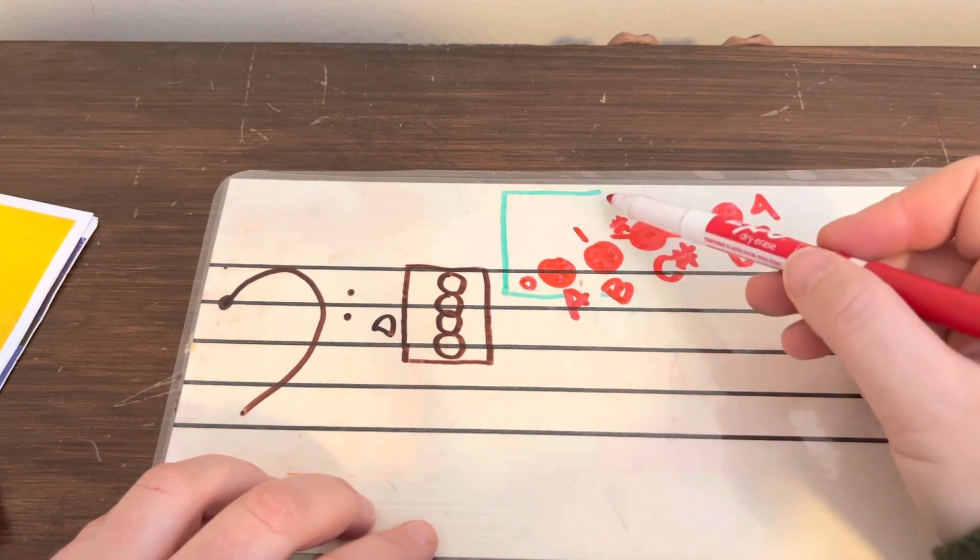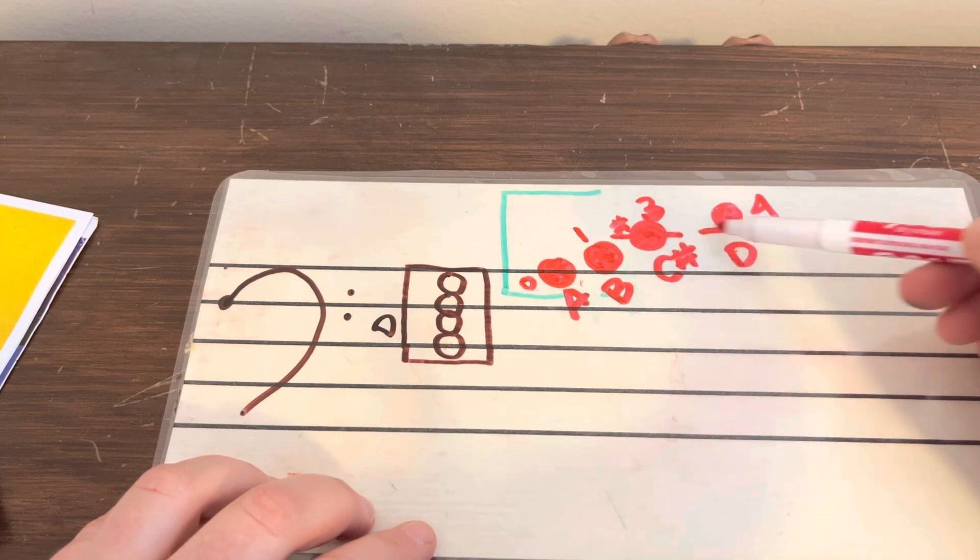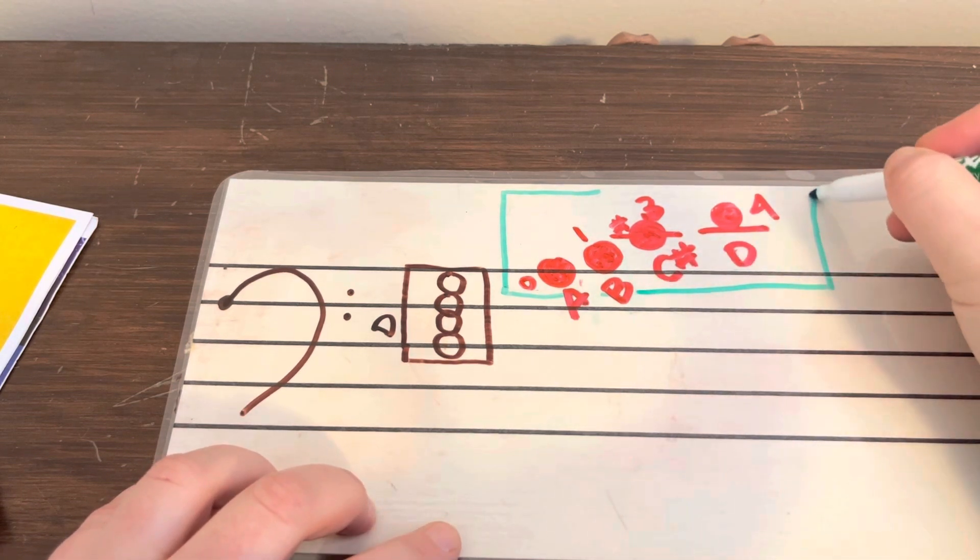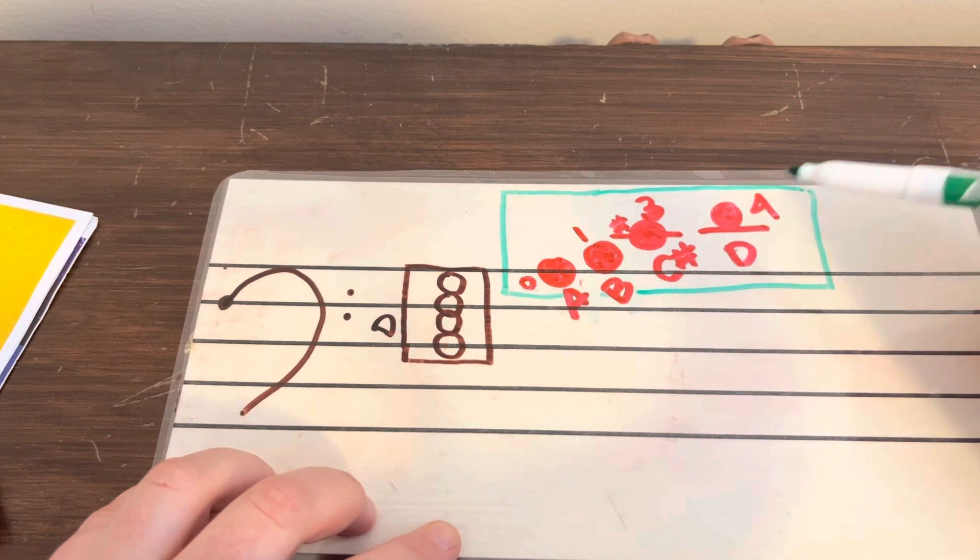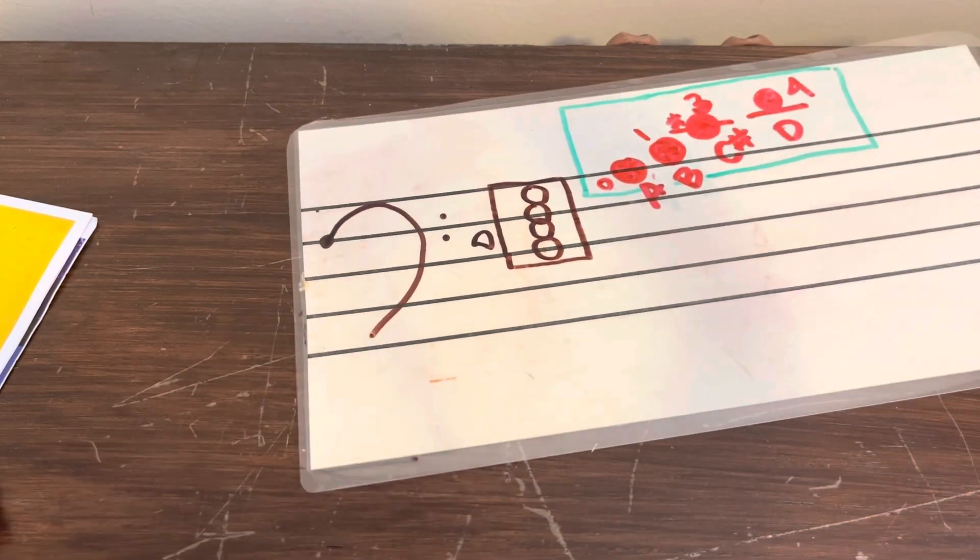Okay. So we've got open A. First finger, B. Third finger, C sharp. Fourth finger, D. Sitting up on top. So again, anything that's on the top line, any notes that are on the top line and up are going to be on your A string. Now it's just a little get ahead type of a thing.